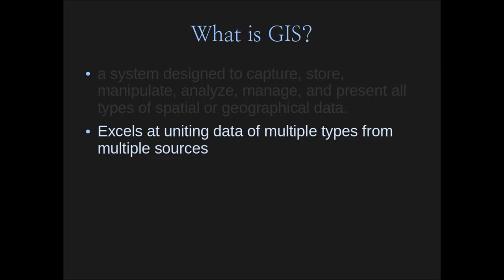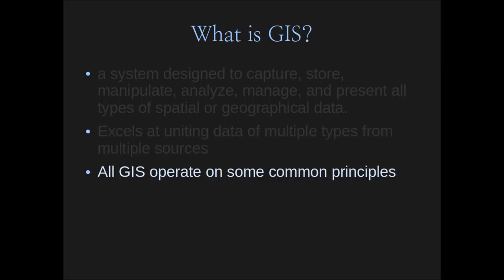Where GIS really excels is in uniting multiple kinds of data from multiple sources. If you're doing one kind of data type, you can do that in simpler statistical programs like R. But where those programs start to flounder is when we start joining many different kinds of data together — that's where geographic information systems flourishes, when we have many different lines of data and we're trying to synthesize those to answer one question.